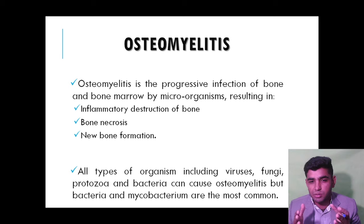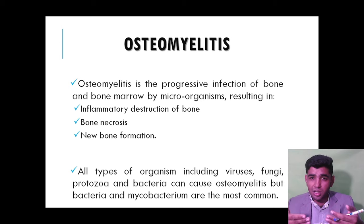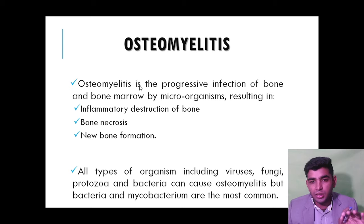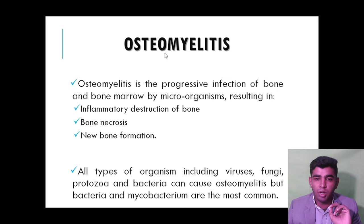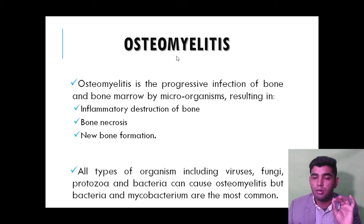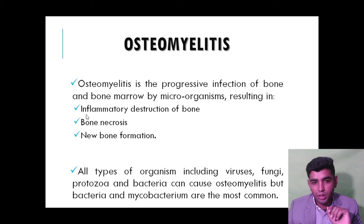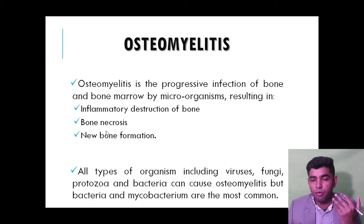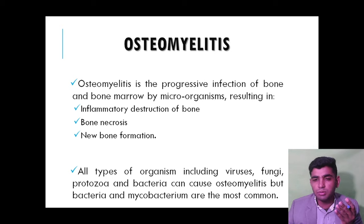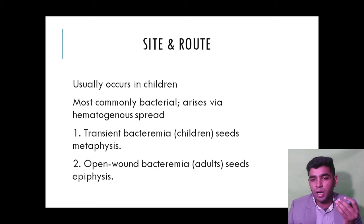Osteomyelitis is the progressive infection of the bone and bone marrow. Osteo means bone, myelo means bone marrow. It involves inflammatory destruction of the bone, bone necrosis, and new bone formation — which is a critical point. It may be caused by viruses, fungi, protozoa, and bacteria.